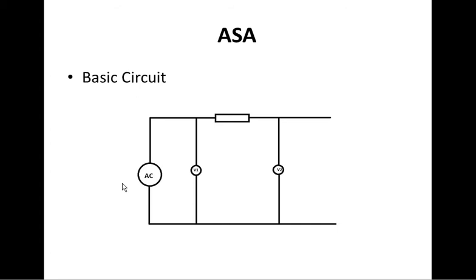The basic circuit to implement the Analog Signature Analyzer is here. You have an AC source and a resistor, and this should be the circuit under test. We measure the voltage before and after the resistor using the stereo channel of the sound card. If you subtract V1 from V2 and divide by the value of the resistor — in our case, 1 kilohm — you get the current flowing through the circuit.